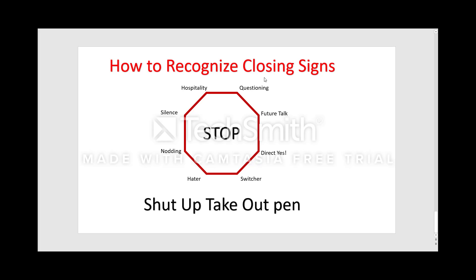The next closing sign is the switcher — they're looking to switch to your product or service from a competitor. You'll learn this during the short story questioning phase of the five steps of the conversation. They may come to you directly telling you they want to switch. In that case, focus on the quality and price comparison to the competitor so you understand why they're switching — always learn the reason.